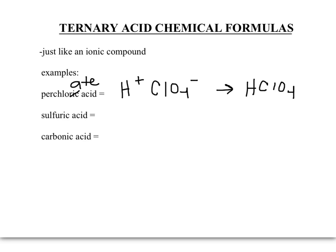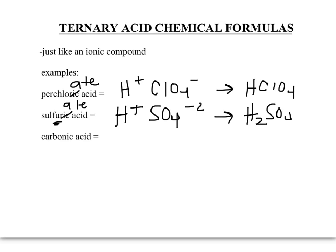For sulfuric acid, notice there is no 'hydro,' so it's a ternary acid — we just need the polyatomic ion. An '-ate' ending gives us an '-ic' ending, but there is no 'sulfurate' polyatomic ion. However, there is a sulfate polyatomic ion — this is the exception with extra letters added. So hydrogen and sulfate: SO4 with a negative two charge. Crisscrossing those charges gives H2SO4.